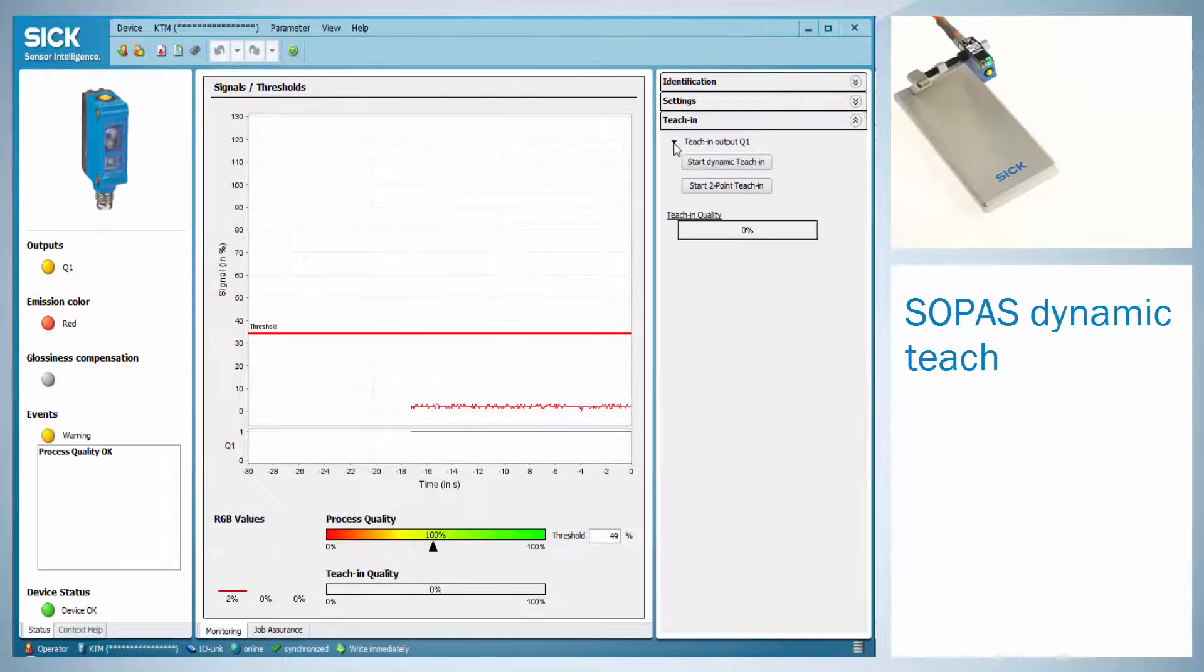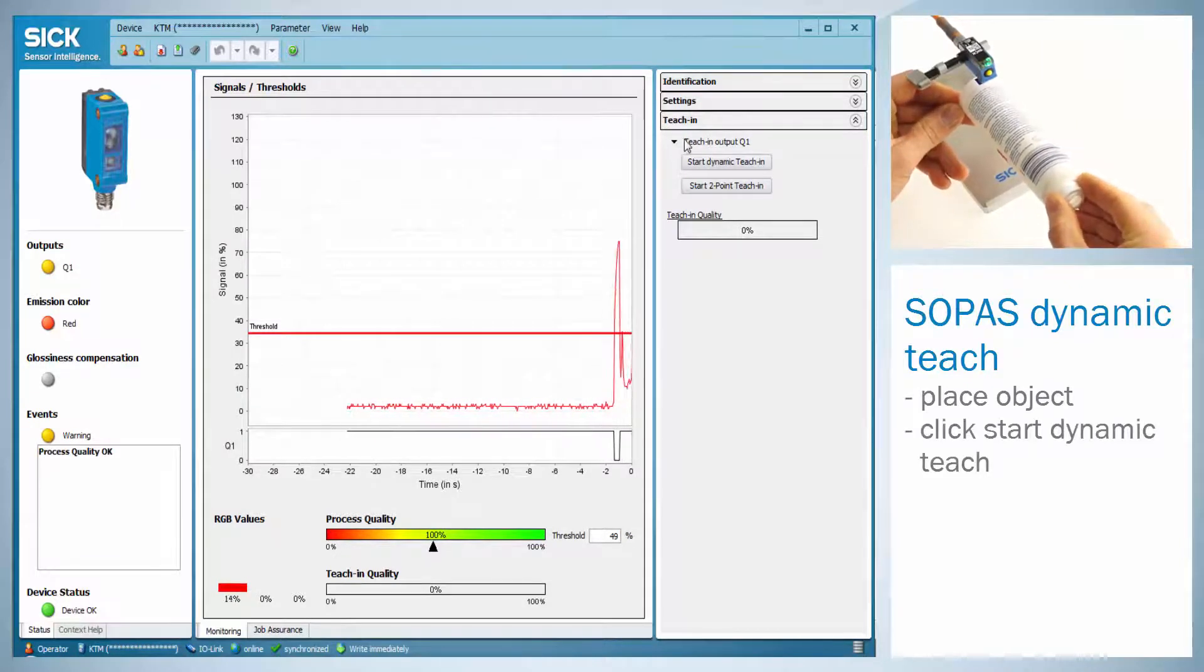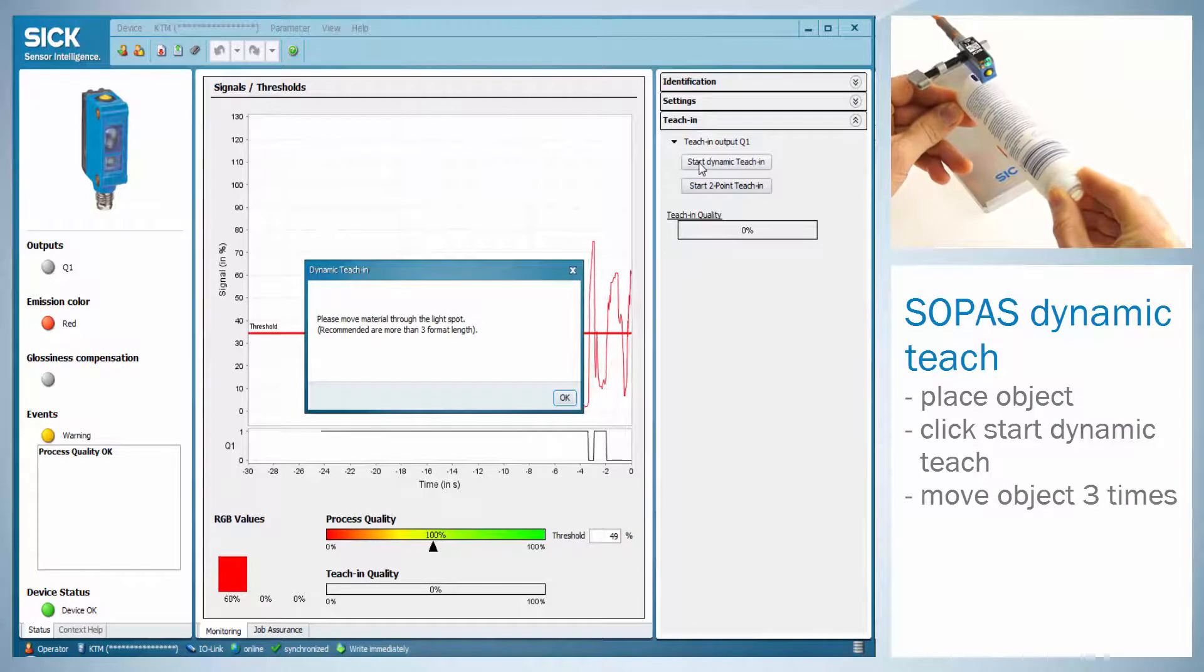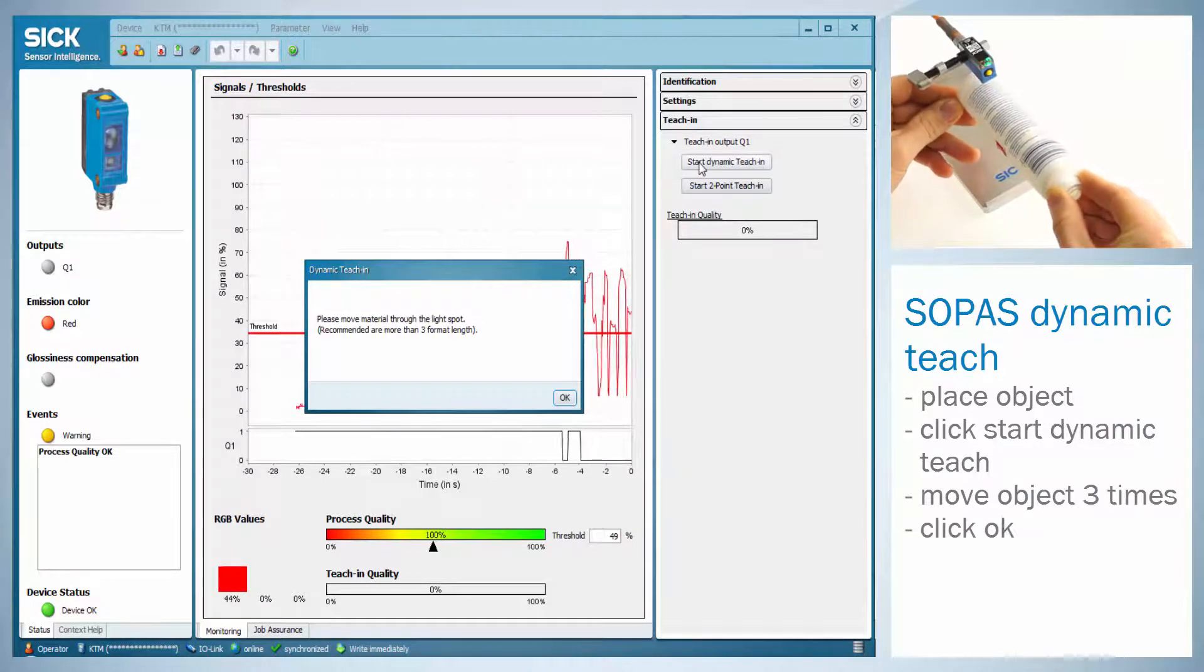The same applies for the dynamic teach. Place the object under the light spot, click the Start dynamic teach button, and move the object at least three times between mark and background. Click OK when you are finished.